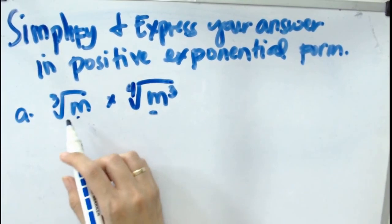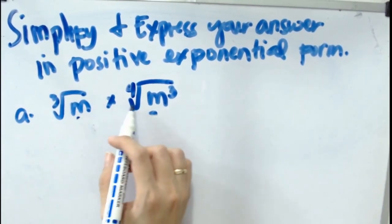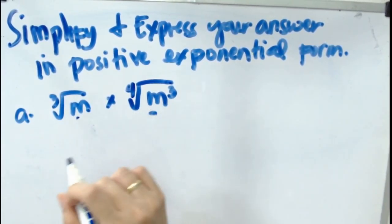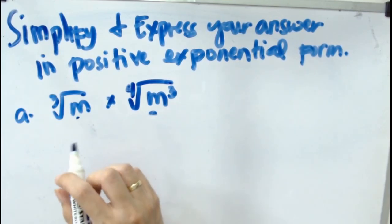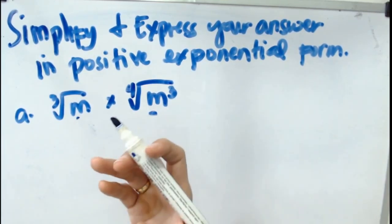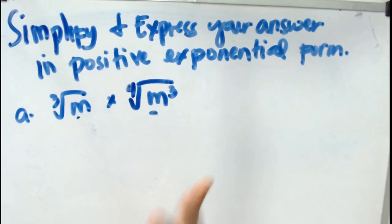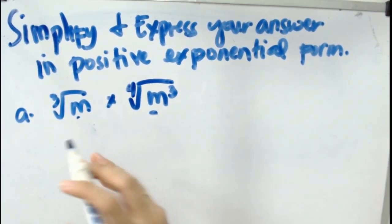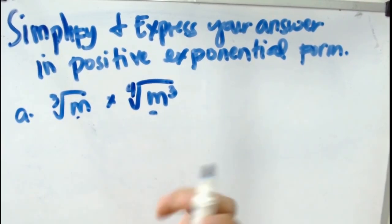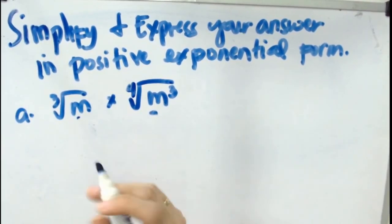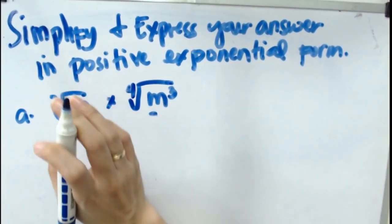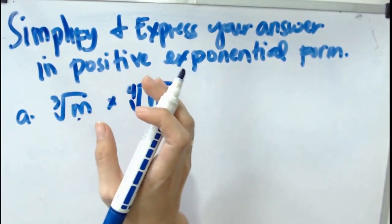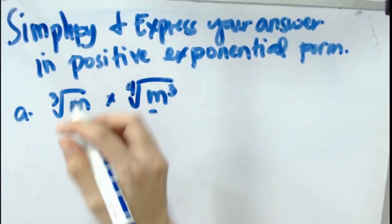So first, we deal with the cube root of m multiplied by the fourth root of m cubed. In our earlier video, we dealt with converting from rational exponents to radical numbers. So this time around, we do it differently — we are going to start with radical numbers and then convert them into rational exponents.